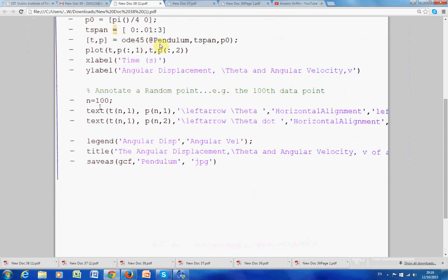On the right-hand side, as before, ODE45, we call the function pendulum. We have the time span, and we have p0. And then, we do the plot.